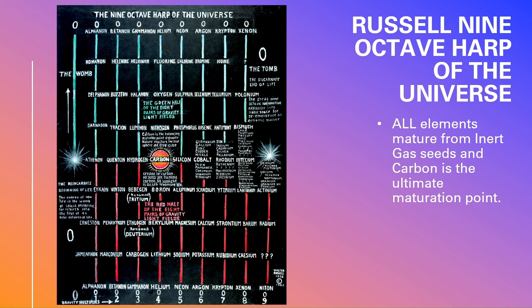So carbon exists exactly at the midtone or midpoint — the fifth of the entire nine-octave chart. As such, it's the only true sphere, and the only true cube crystallizes around it as its cube wave field. It's the ultimate maturation point or point of ultimate density, and carbon, as we know, has the highest melting point at 3,600 degrees centigrade. All the elements mature from inert gas seeds toward carbon, and once we reach carbon, we start to unwind and throw out heavier and more dense elements such as plutonium and neptunium in the ninth octave.